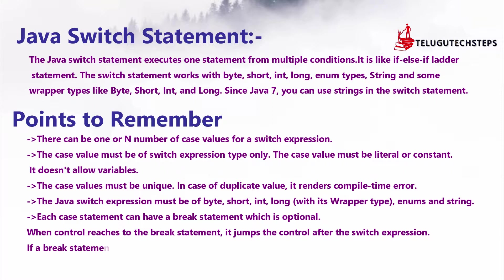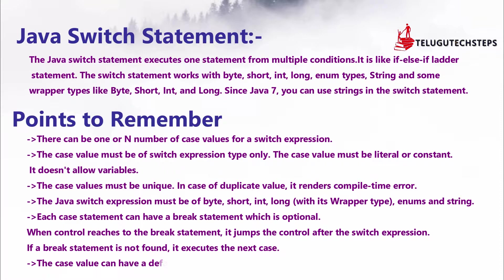The switch statement can have a default label, which is optional. For example, if you have 12 months numbered 1 to 12, and someone inputs 13 or 14 — which are invalid months — the default label will print an 'invalid' output for those cases.